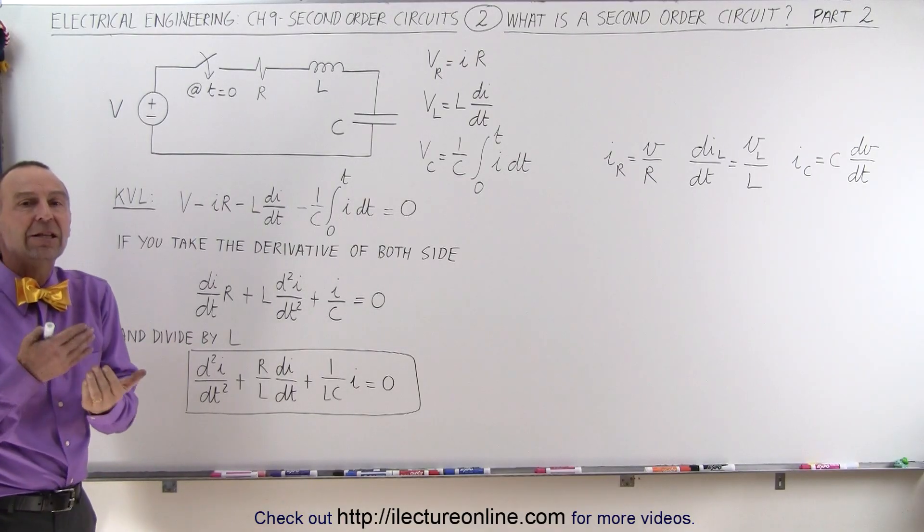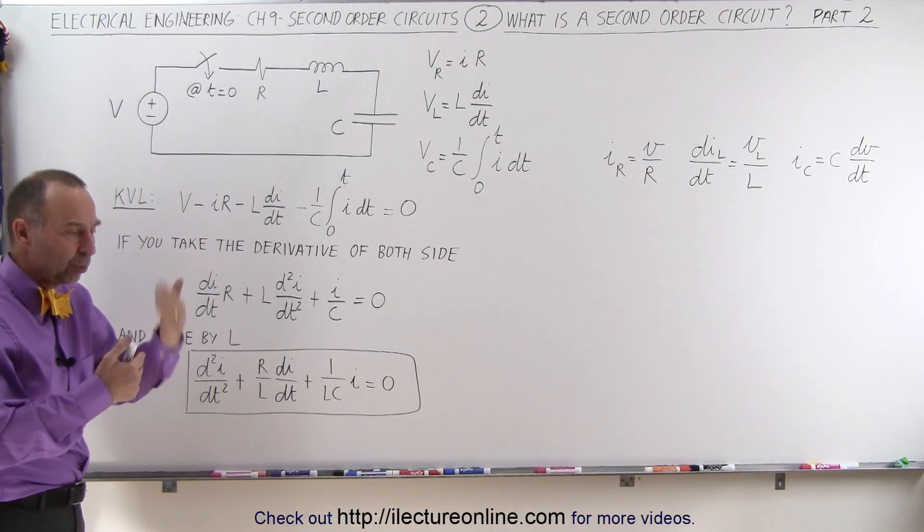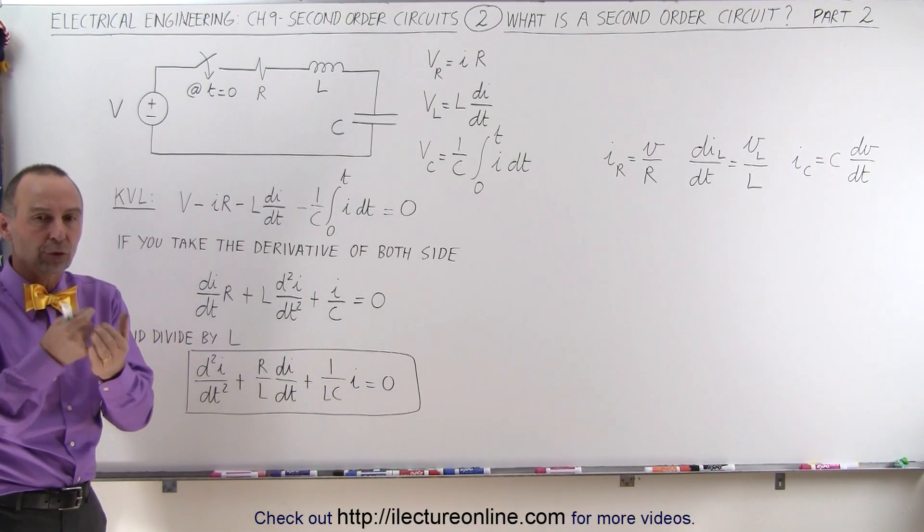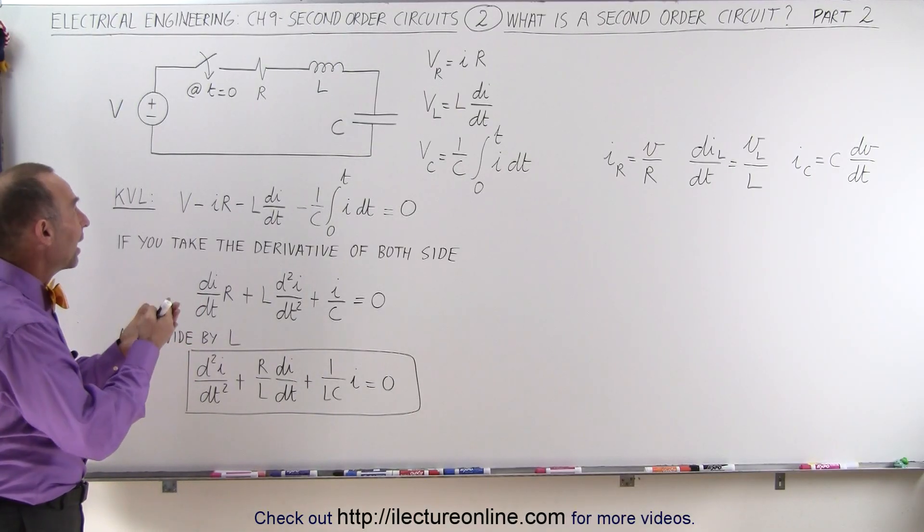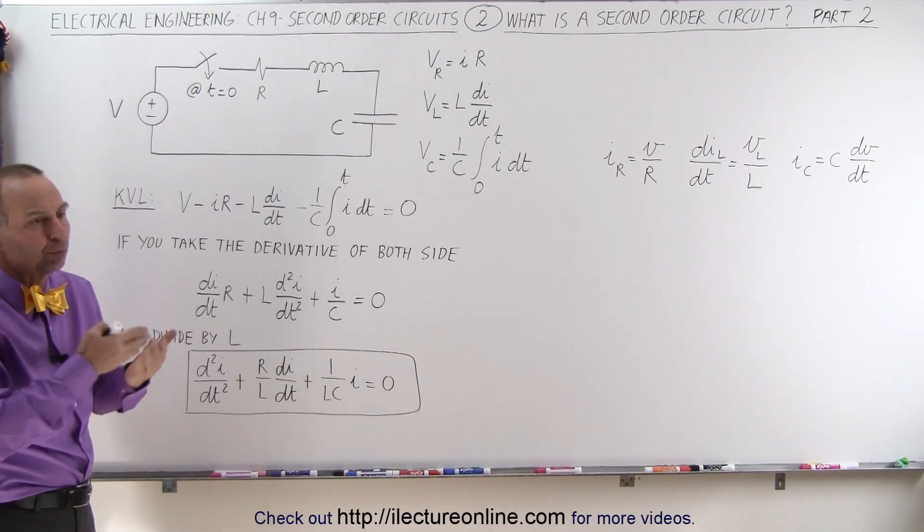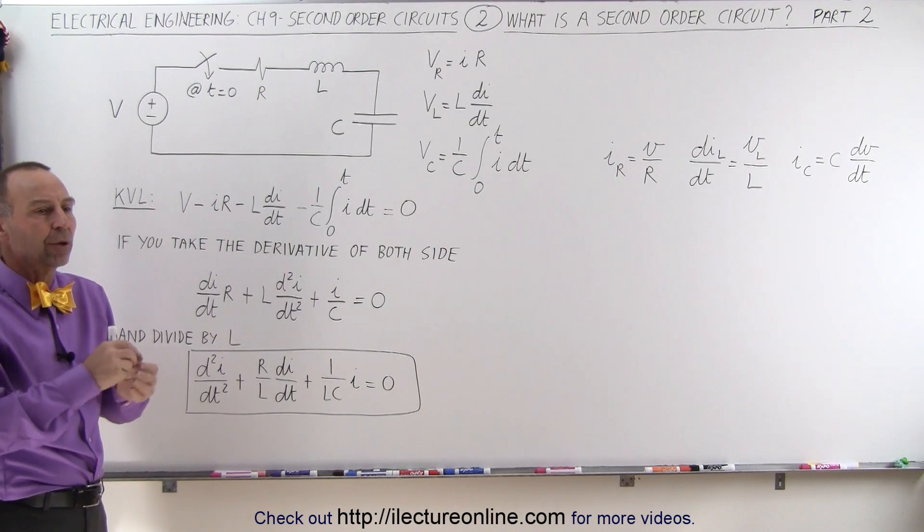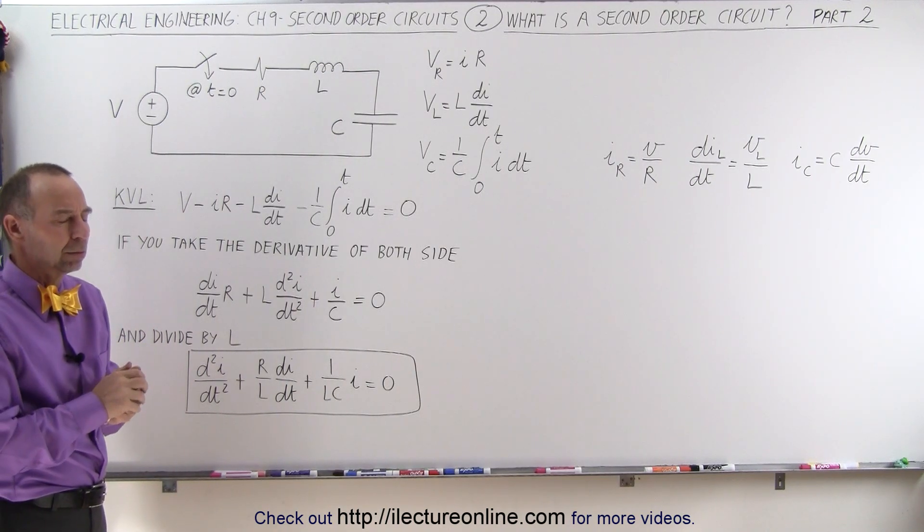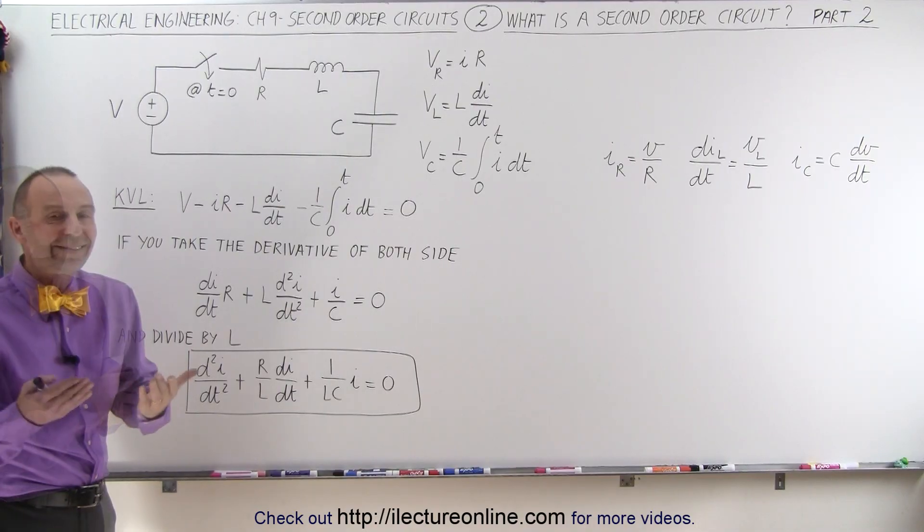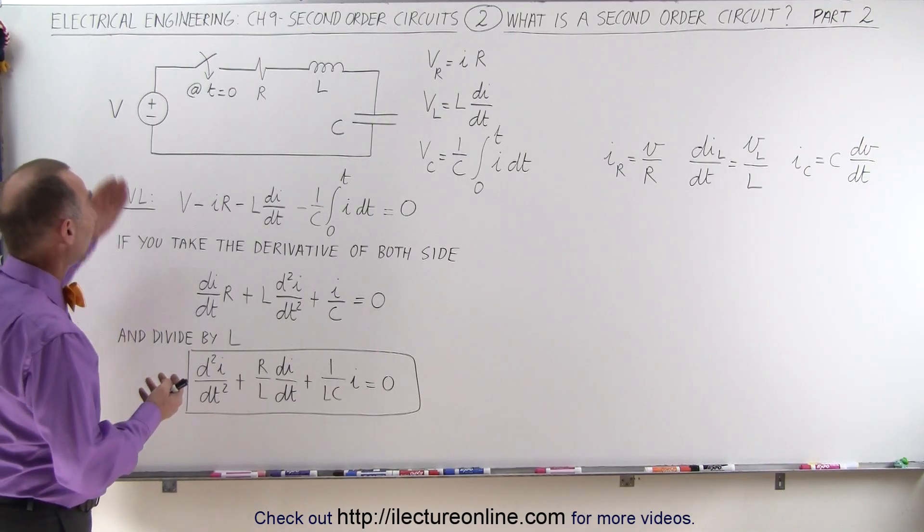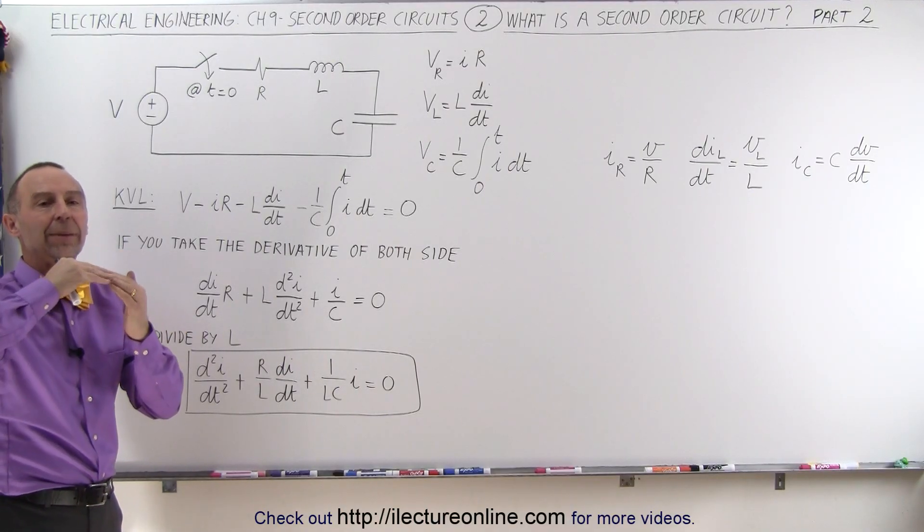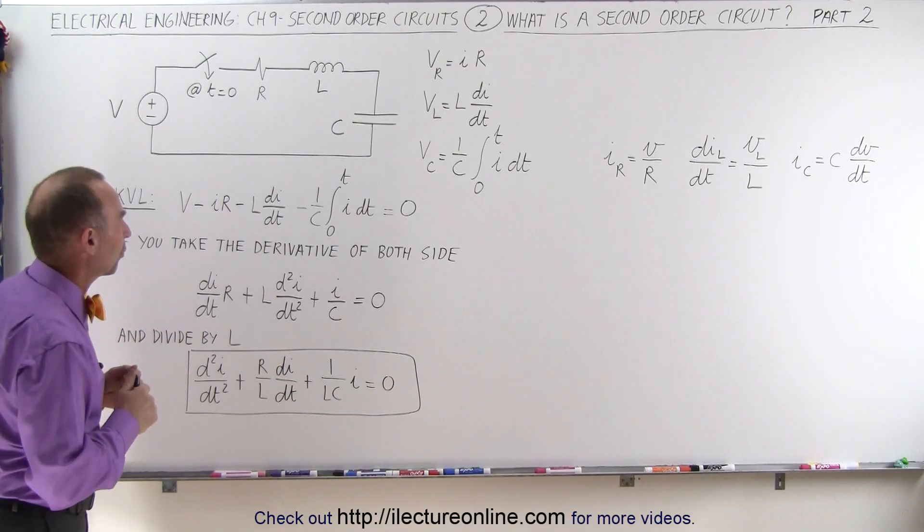Notice that typically we have an initial condition. For example, a switch will be closed or opened, or a current source or voltage source will be turned on at some time, let's call that time equals zero. Prior to that event, there may be some other steady state situation, but once the switch closes, something has changed. We'll go through a transient period and then end up at a different steady state situation.